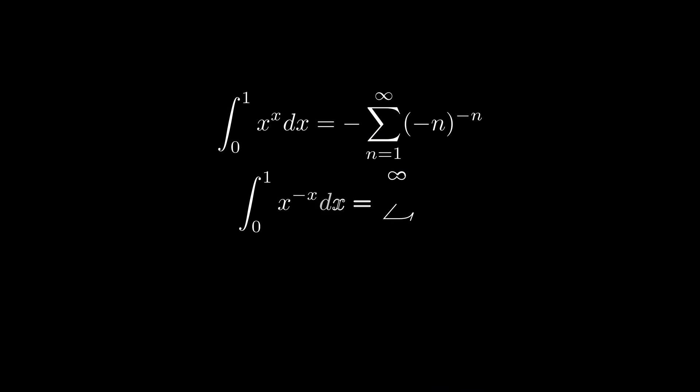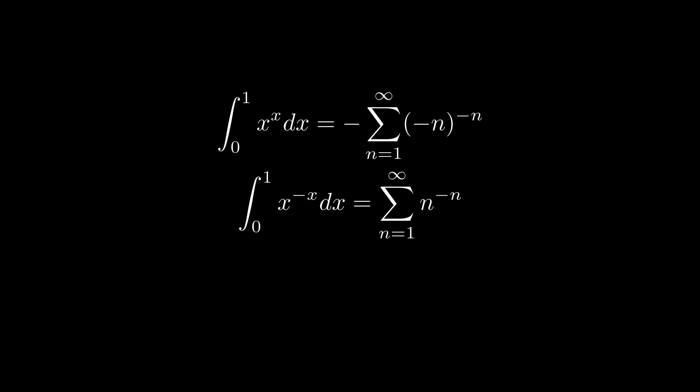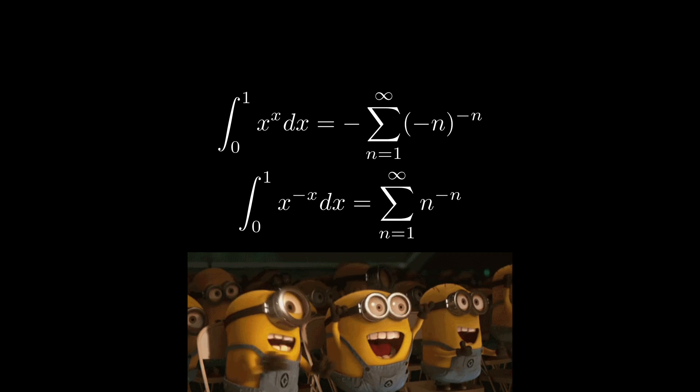This identity and its twin identity were first discovered by John Bernoulli in 1697. I have to admit that they do look too good to be true that can only appear in a student's dream.